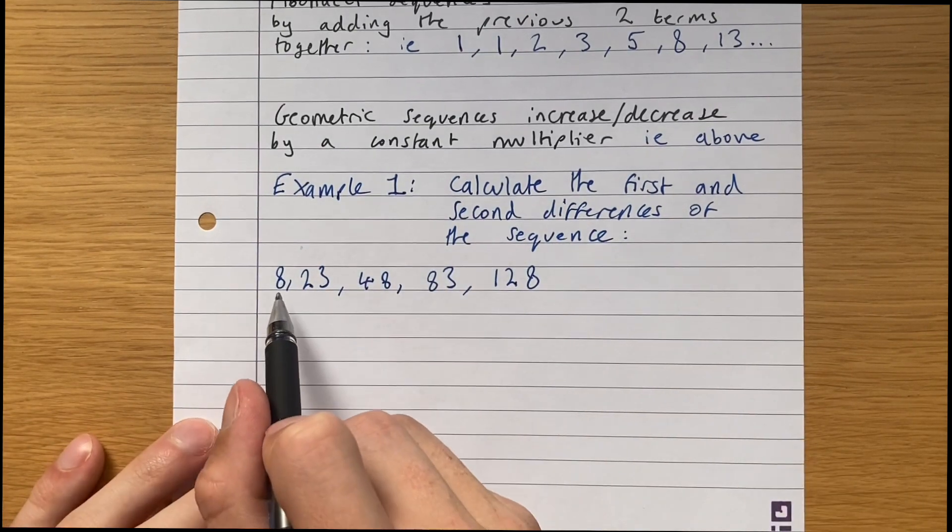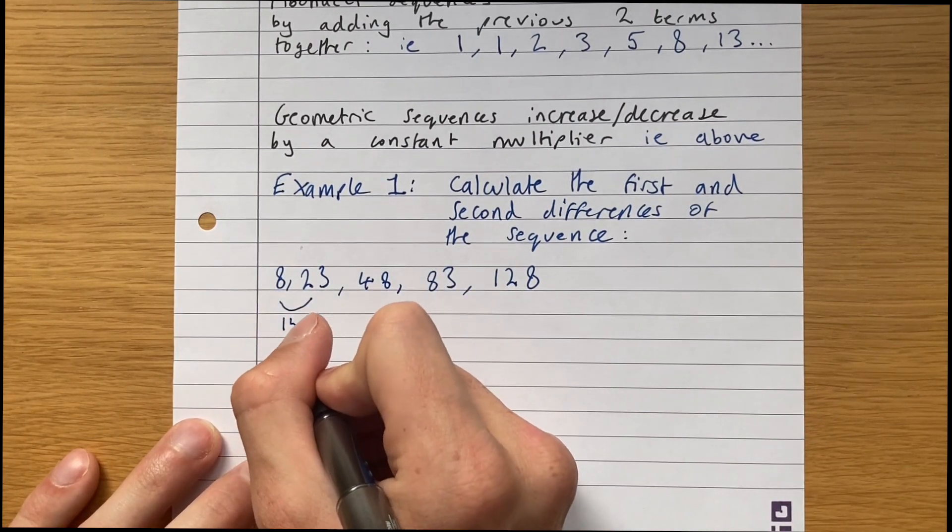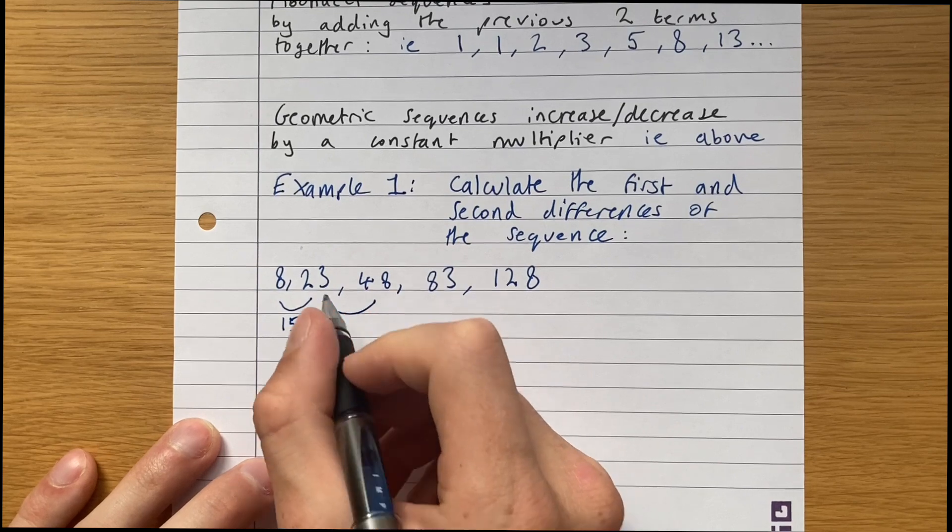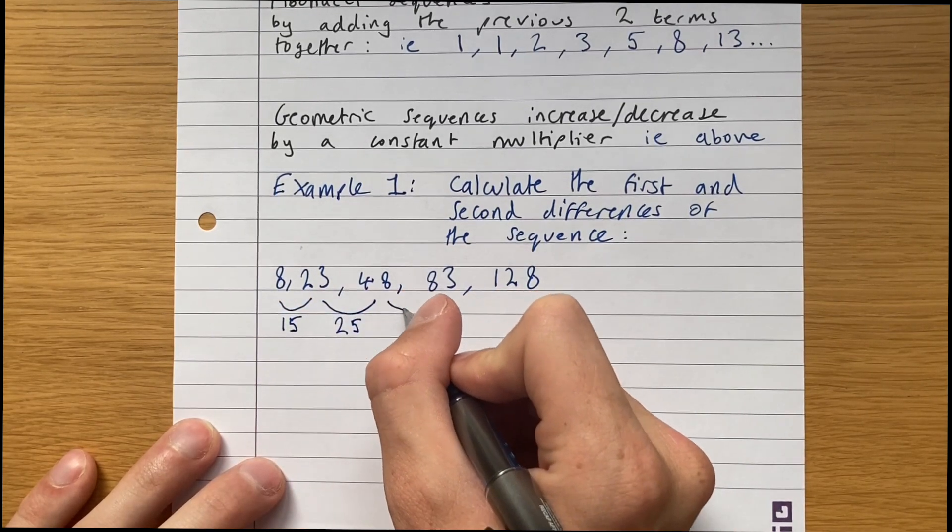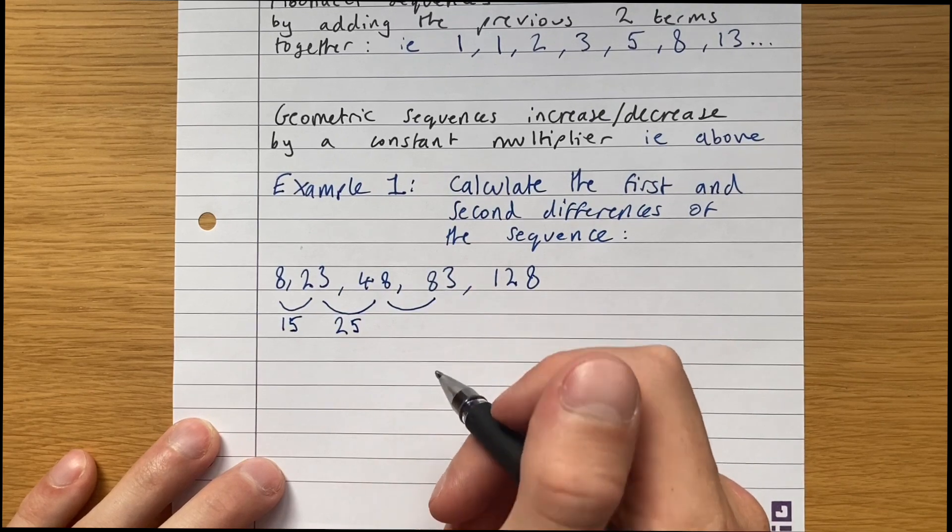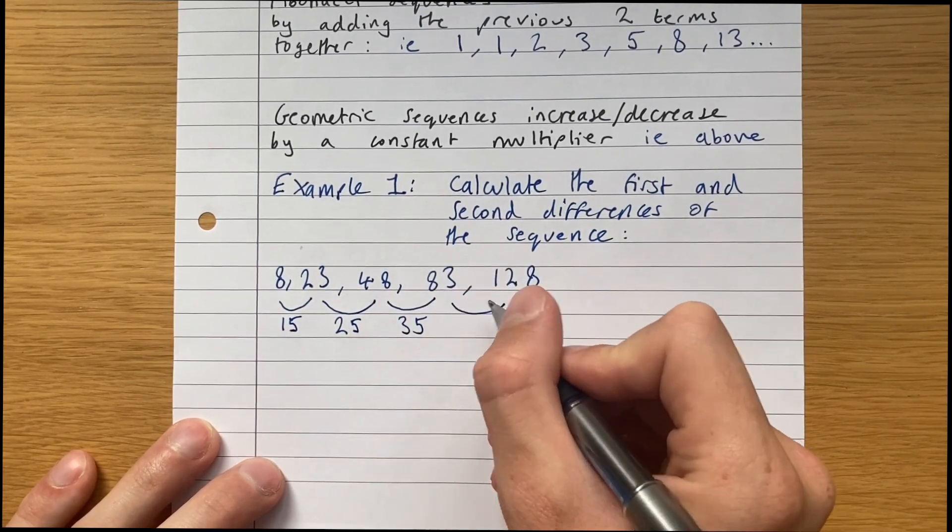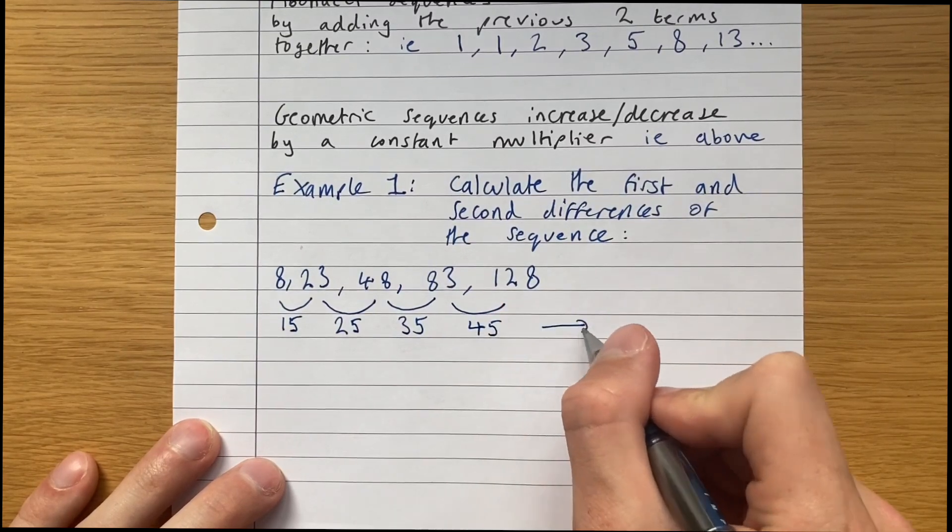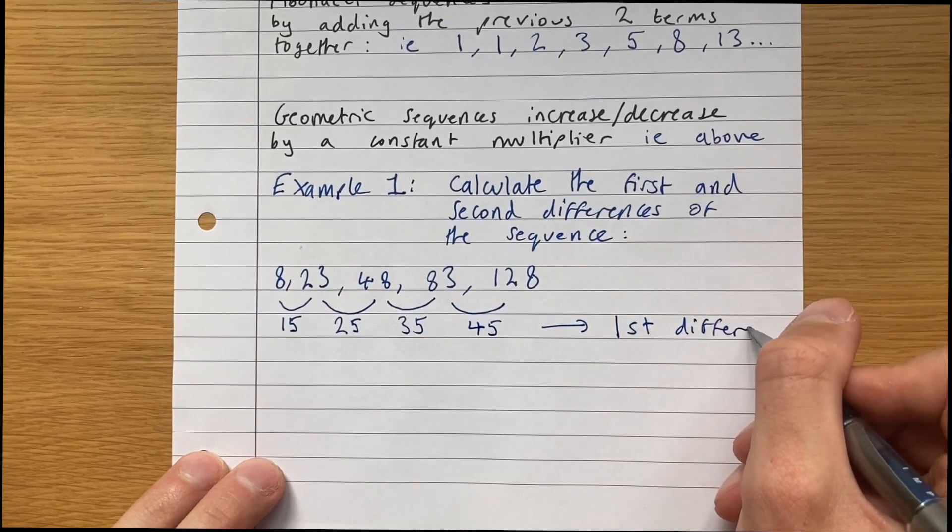So what we do is calculate the difference between all the terms. The difference between 8 and 23 is 15. The difference between 23 and 48 is 25. 48 and 83 is 35. 83 and 128 is 45. These are what's known as the first differences.